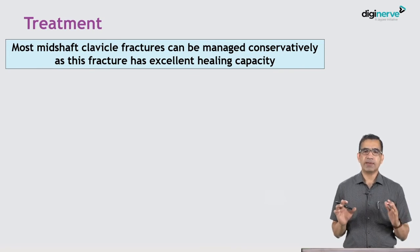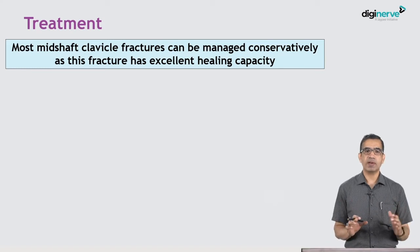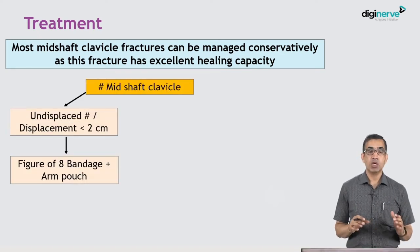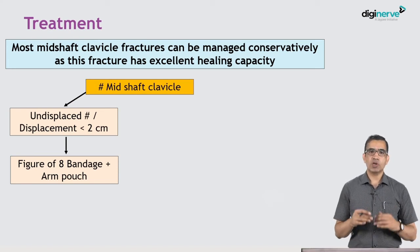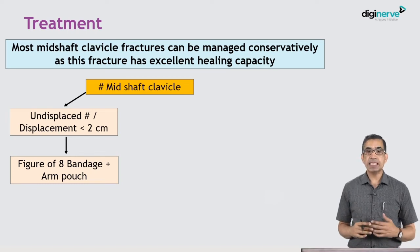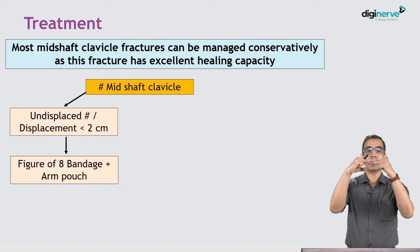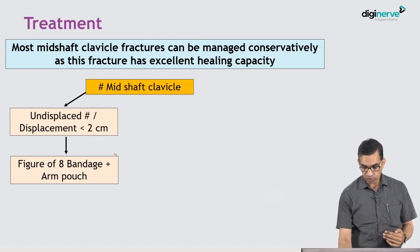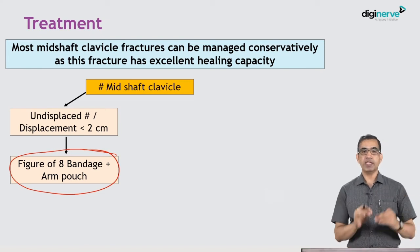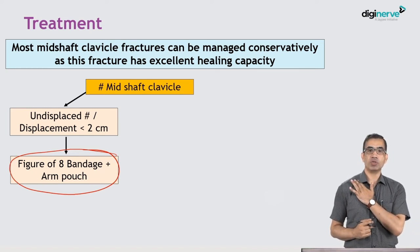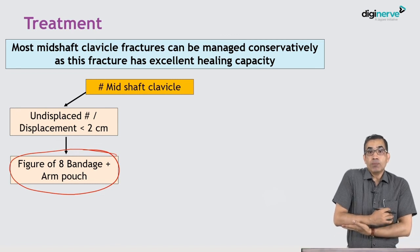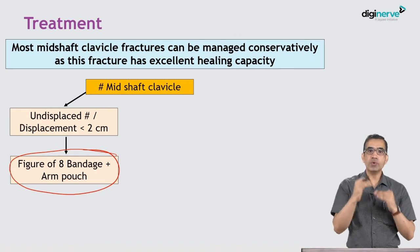How do we treat the fractured clavicle? Remember, most mid-shaft clavicle fractures — almost 90 to 95 percent — respond very well to conservative treatment because the clavicle has excellent healing capacity. If it is undisplaced, minimally displaced, or displaced less than two centimeters (the two fragments not overriding each other by more than two centimeters), such fractures can be managed with a figure-of-eight bandage and arm pouch. The figure-of-eight bandage slightly pushes the medial fragment downwards, while the arm pouch raises the arm upwards so the two fragments come closer and reduce overlap.